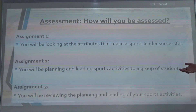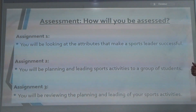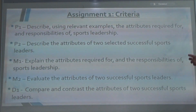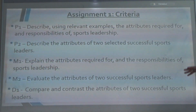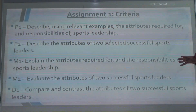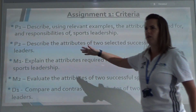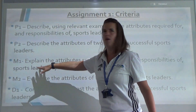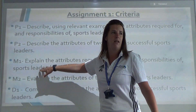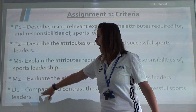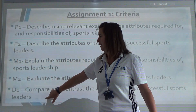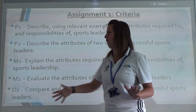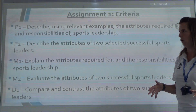I'm going to go into a little bit more detail on each unit, and then I'd like you to make a start. You understand P1, P2, M1, M2, and D1 because of the other units you've completed. P stands for pass, equivalent to a 4 or 5. M stands for merit, equivalent to a 6 or 7. And D is distinction, equivalent to around a 7, 8, or 9.